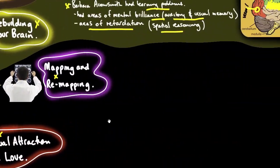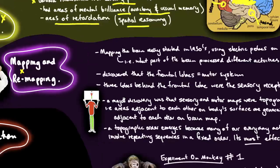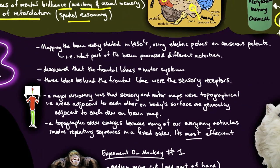So the next topic we'll be looking at is the mapping and remapping of the brain. This really started in earnest in the 1930s, using electric probes on conscious patients. You may have seen images where the patient is conscious, the skull is open, and they're probing in the brain.